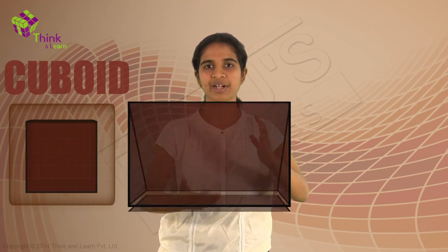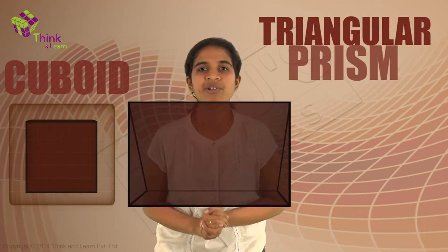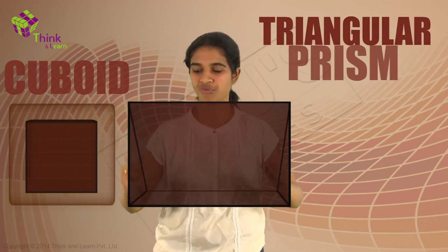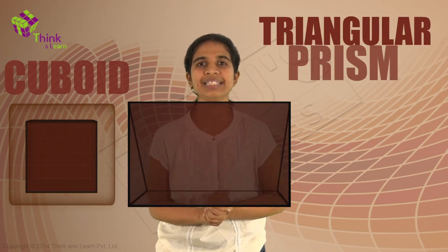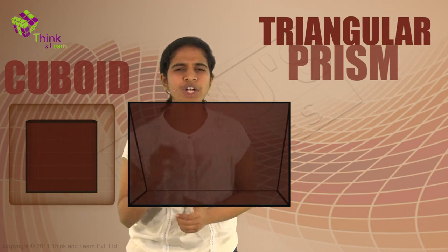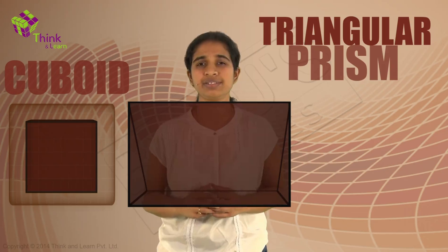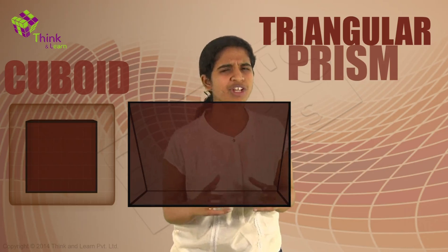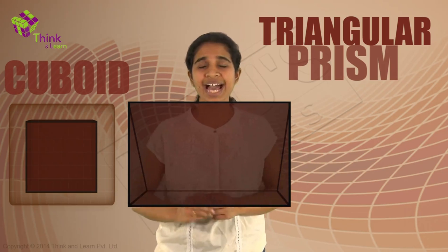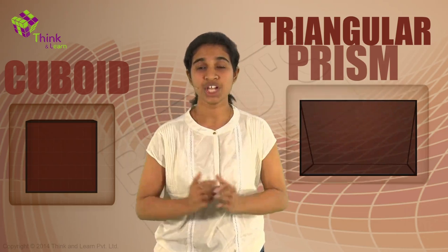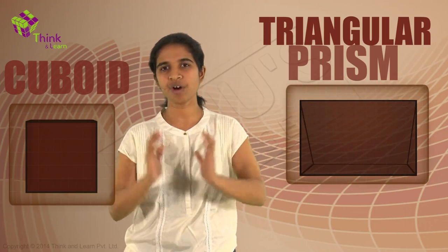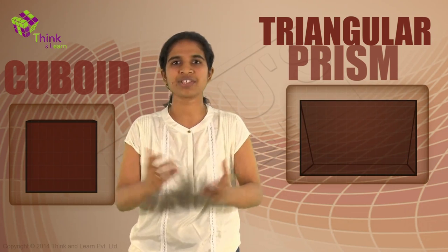Similarly, for the prism, I can take two right-angled triangles and three rectangles — one rectangle here, one rectangle here, and one rectangle below. We have a triangular prism which is hollow, formed of two triangles and three rectangles. So what you see is that all of these three-dimensional solids, be they hollow or solid, are actually formed of two-dimensional figures. A cuboid is formed of six rectangles.